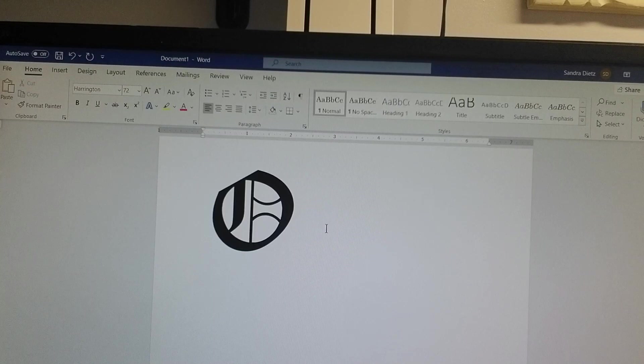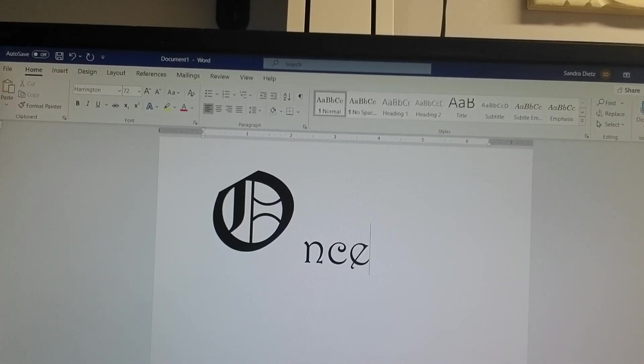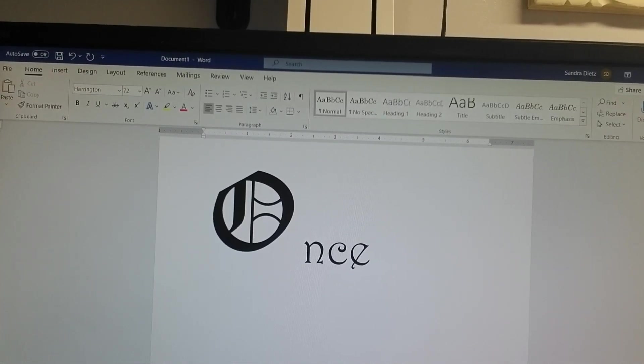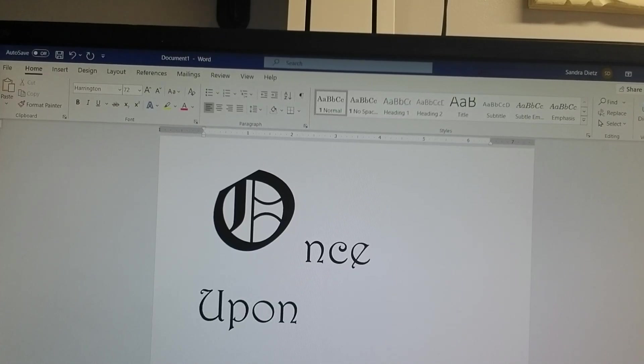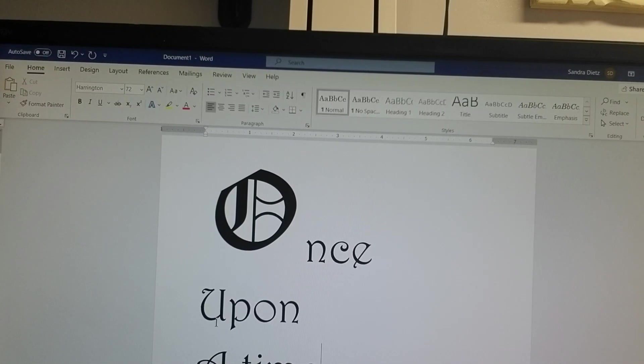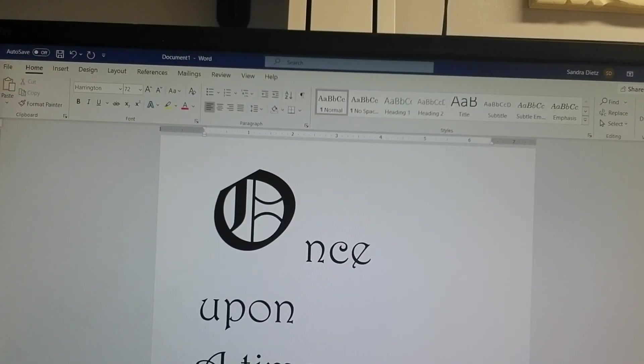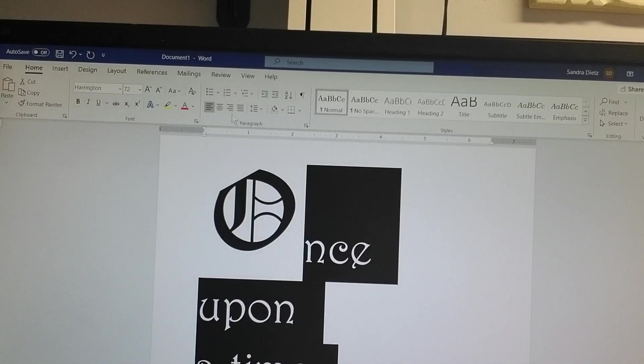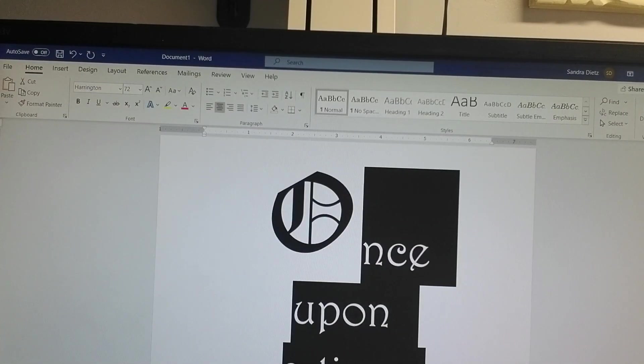The next thing I'm going to do is finish the phrase 'once upon a time' and I'm using the font Harrington and the size is 72. I'm going to change the parts that were capitalized into lowercase letters because I want them to be the same. Then I'm going to select all the letters and put them centered onto the page. Next I'm going to print off the paper.